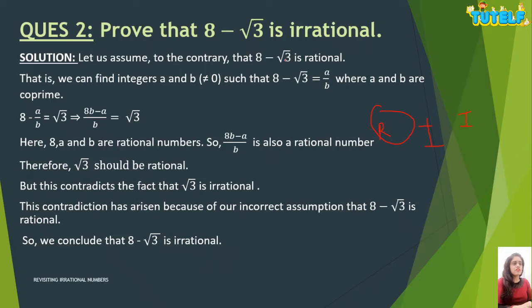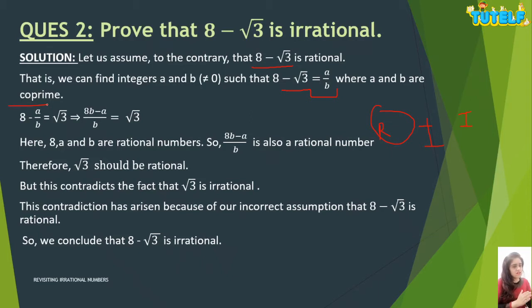The starting is the same: assume that 8 minus root 3 is rational. If it is rational, it can be written in the form A upon B, where A and B are co-prime. So 8 minus root 3 equals A upon B. Now take all the rational numbers to one side and the irrational number to the other side. Taking A upon B to the other side gives minus A upon B, so you get 8 minus A upon B equals root 3.